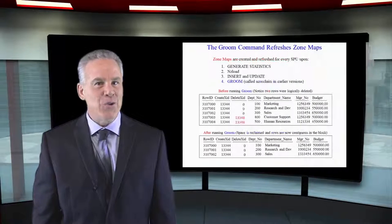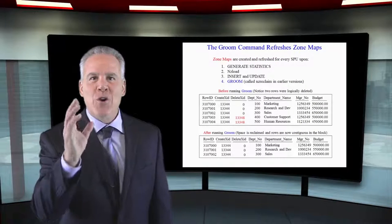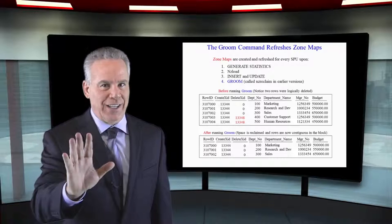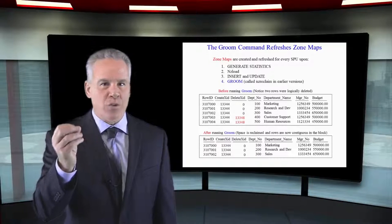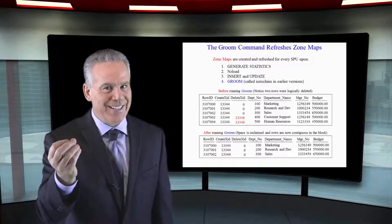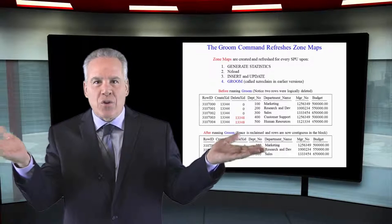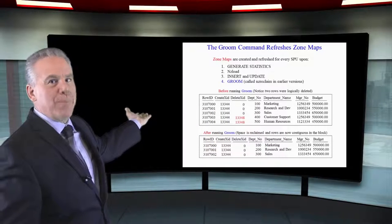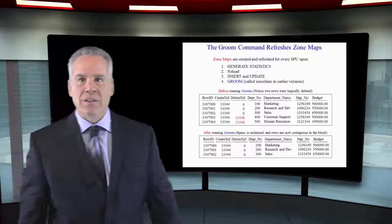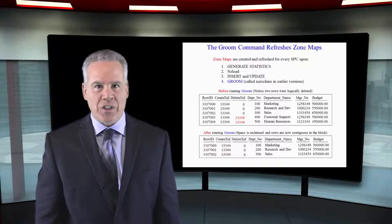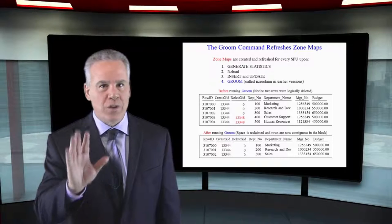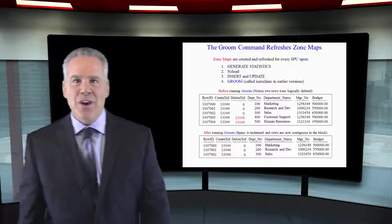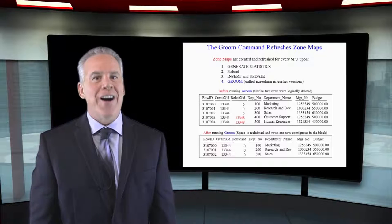As soon as you do your groom command, the zone maps are completely updated and they're completely current. This also happens when you do generate statistics, an NZ load or any insert or update. As you can see at the top, we had rows that had been deleted that physically are there but not logically. After we do the groom, two things happen. Those rows are physically removed and the zone maps are updated.